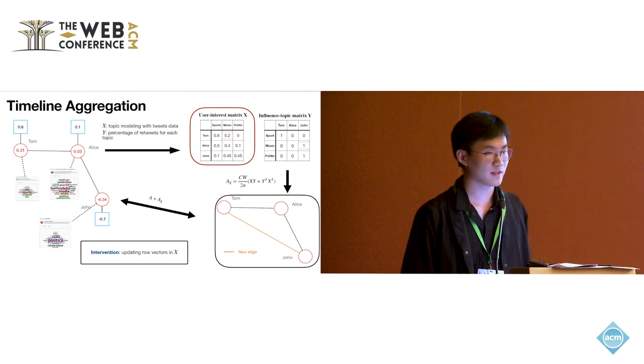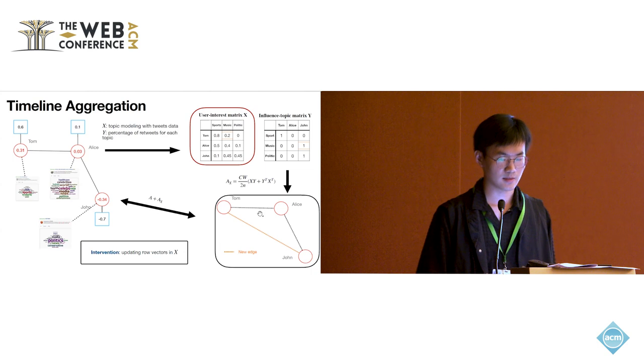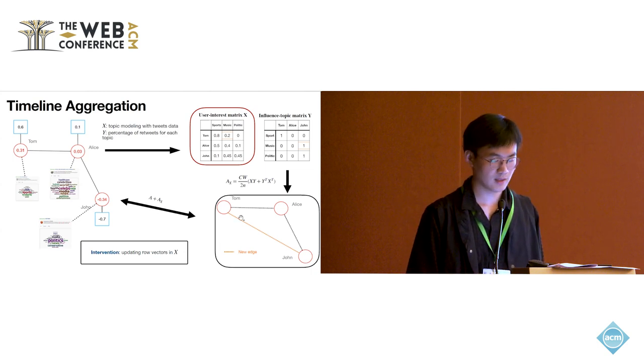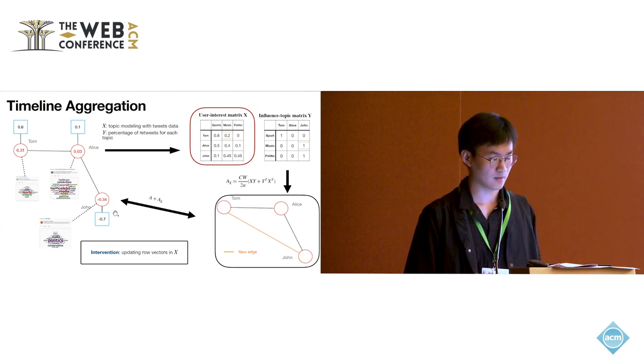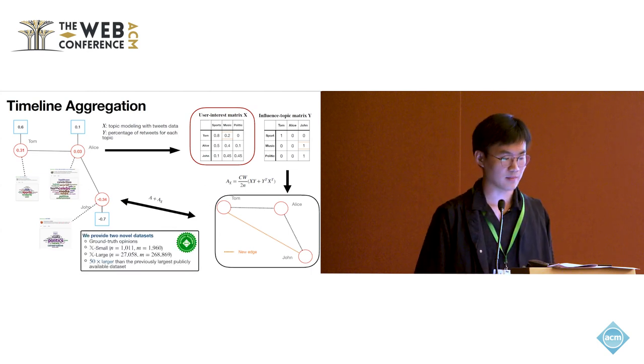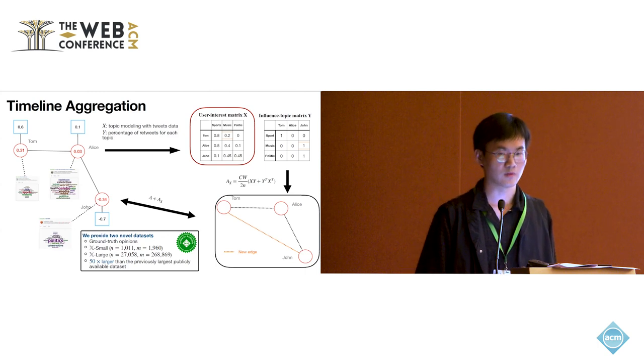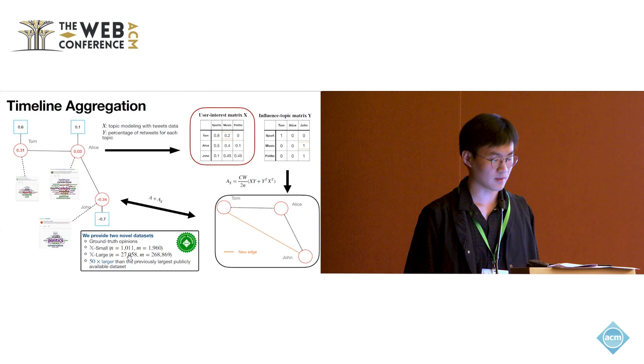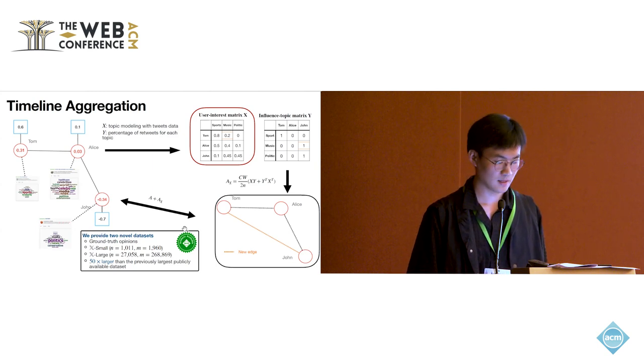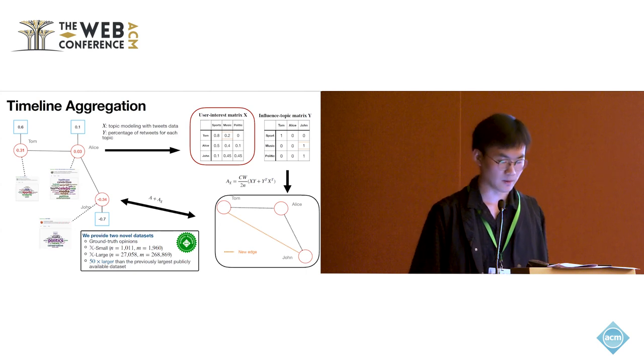Now we could do interventions by changing the user interest matrix X. If we change X, the low-rank matrix AX changes, and then we add new edges into the original graph. Given these timeline aggregations, we propose two novel datasets with ground truth opinions and also ground truth user interest matrix X and the influence topic matrix Y. The largest dataset we provide is Twitter large with more than 27,000 nodes, which is almost 50 times larger than previous publicly available datasets.